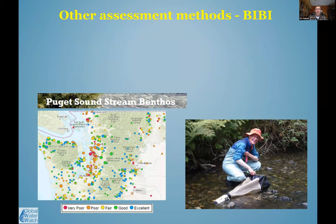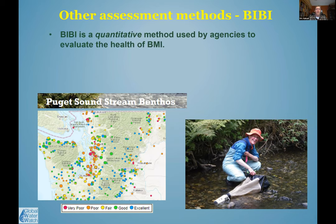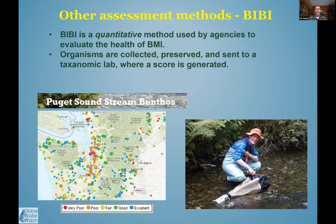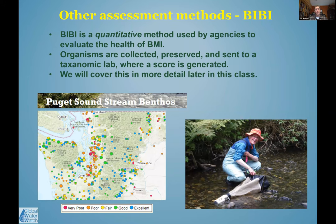Stream biomonitoring is one assessment method. There are other methods including BIBI — the Benthic Index of Biotic Integrity — a quantitative method used by agencies to evaluate the health of benthic macroinvertebrates. In this method you collect organisms, preserve them, and send them to a lab, which generates a score based on how many you found of what type and how many are pollution tolerant versus not.